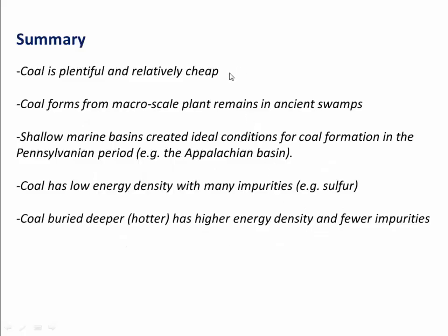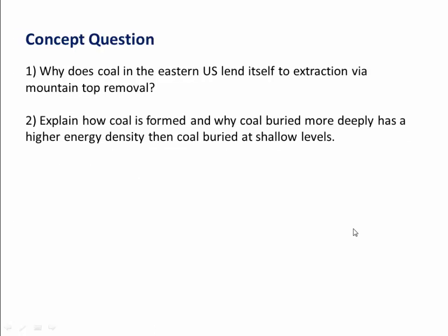So in summary: coal is very plentiful and very cheap. It forms from plant remains in swamps. Shallow marine basins created ideal conditions for coal during the Pennsylvanian period, namely the Appalachian Basin. Coal is very low energy density and has many impurities, but the deeper you bury it, the higher that energy density gets. Here are a couple of concept questions, and thanks for listening.